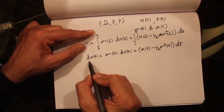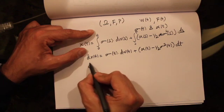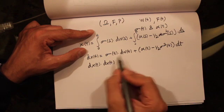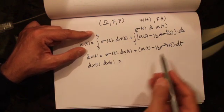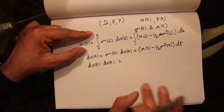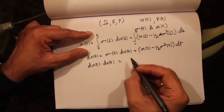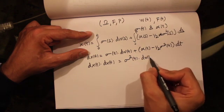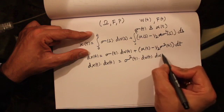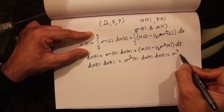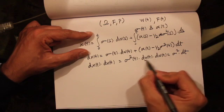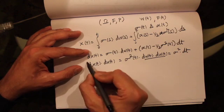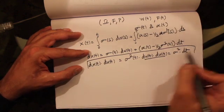If we want to figure out the quadratic variation of our Itô process, we compute dX(t) times dX(t). All dt·dt terms go to zero, dW·dt terms also go to zero. All we are left with is sigma squared(t) dW(t)·dW(t), which is nothing but sigma squared(t) dt, since dW(t)·dW(t) = dt. This is an important result to keep in mind.